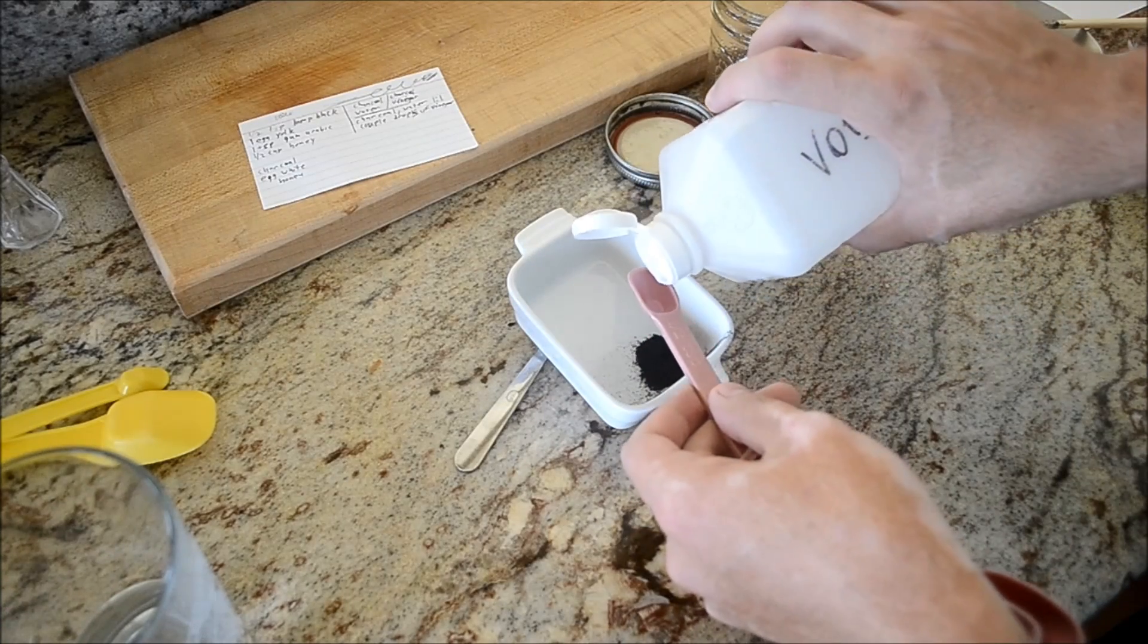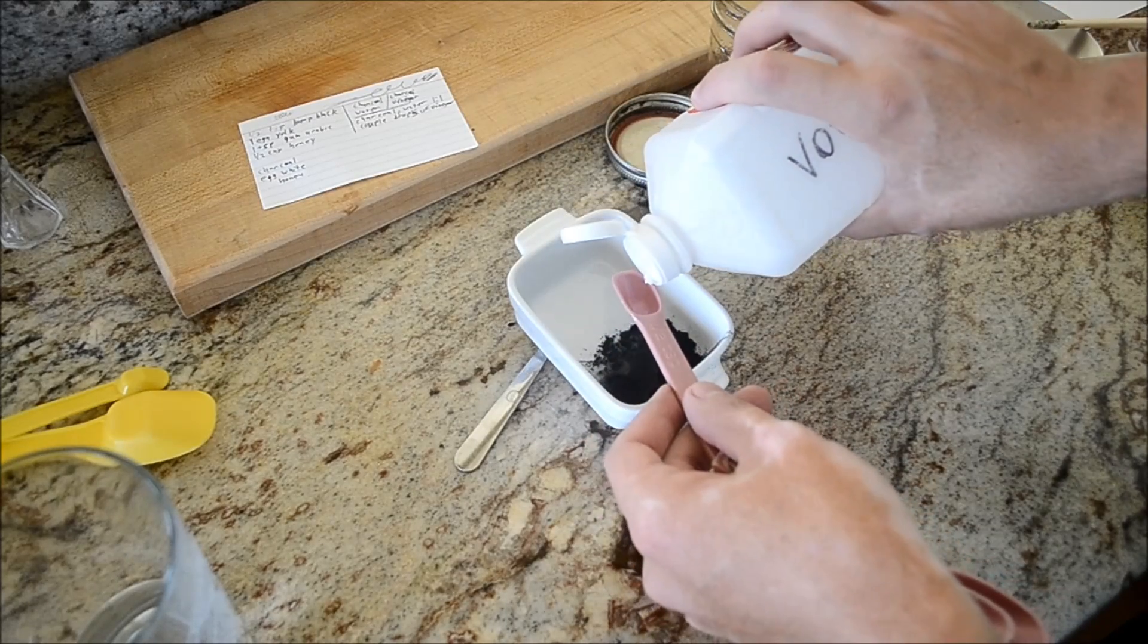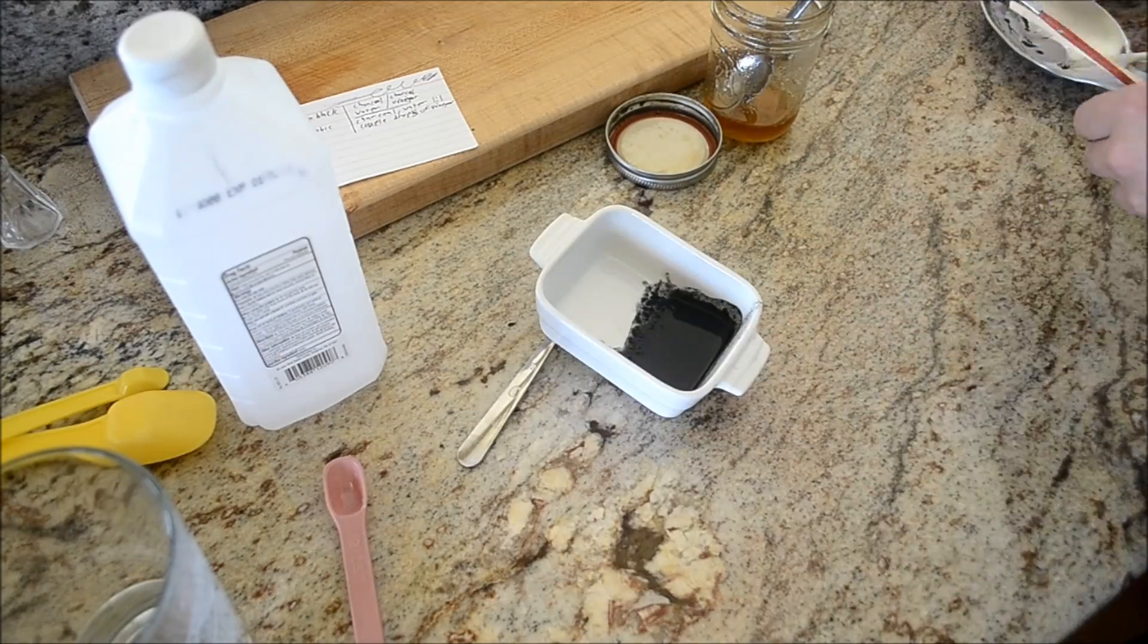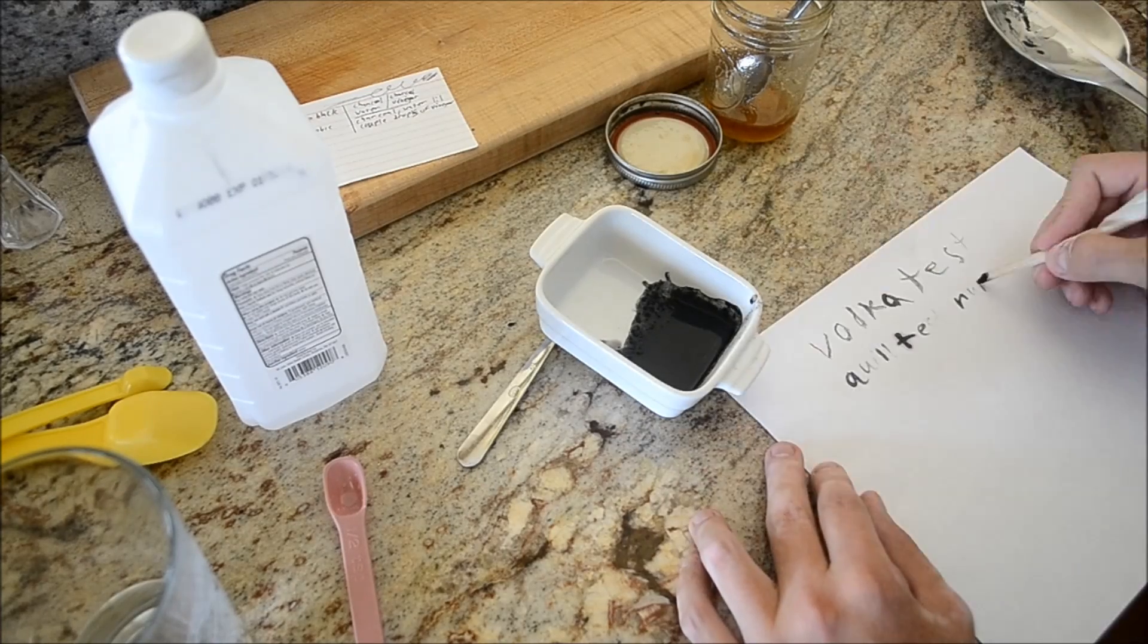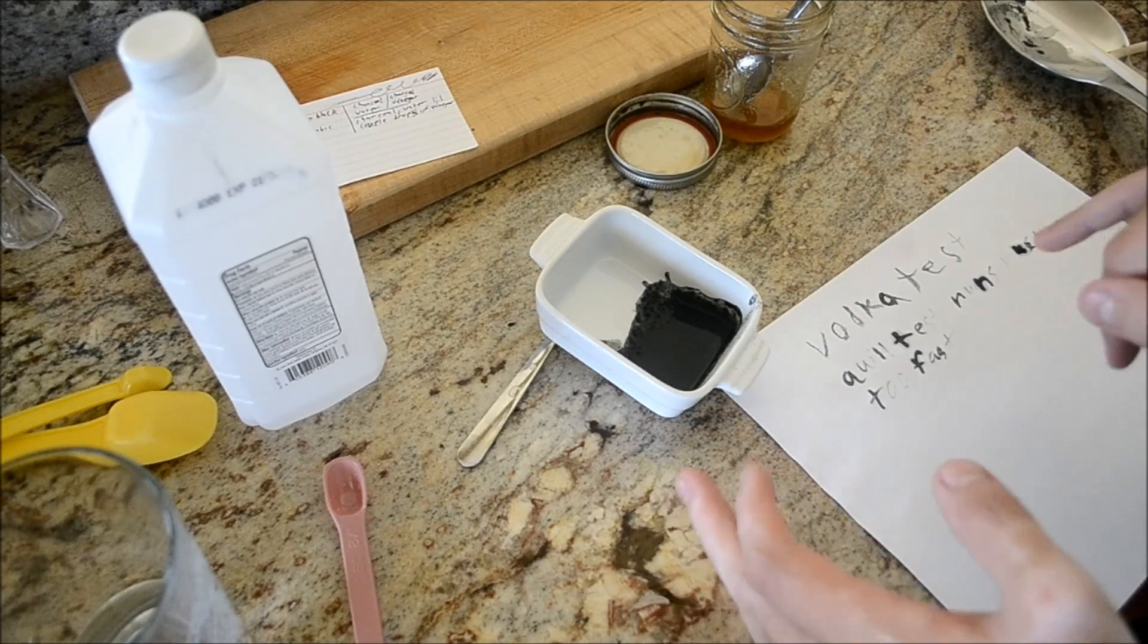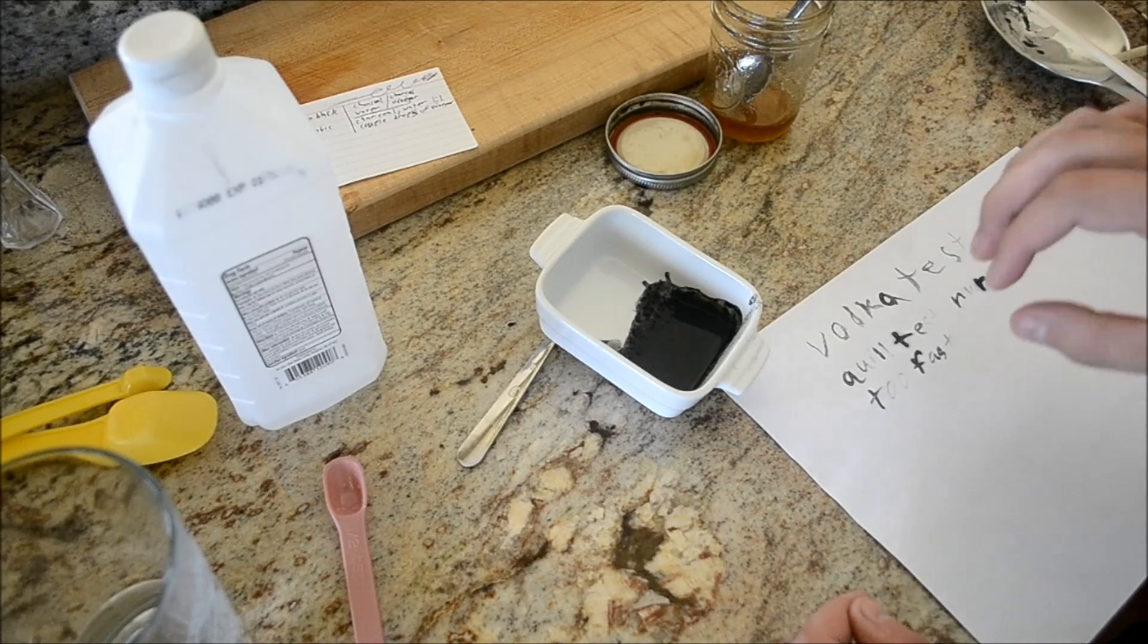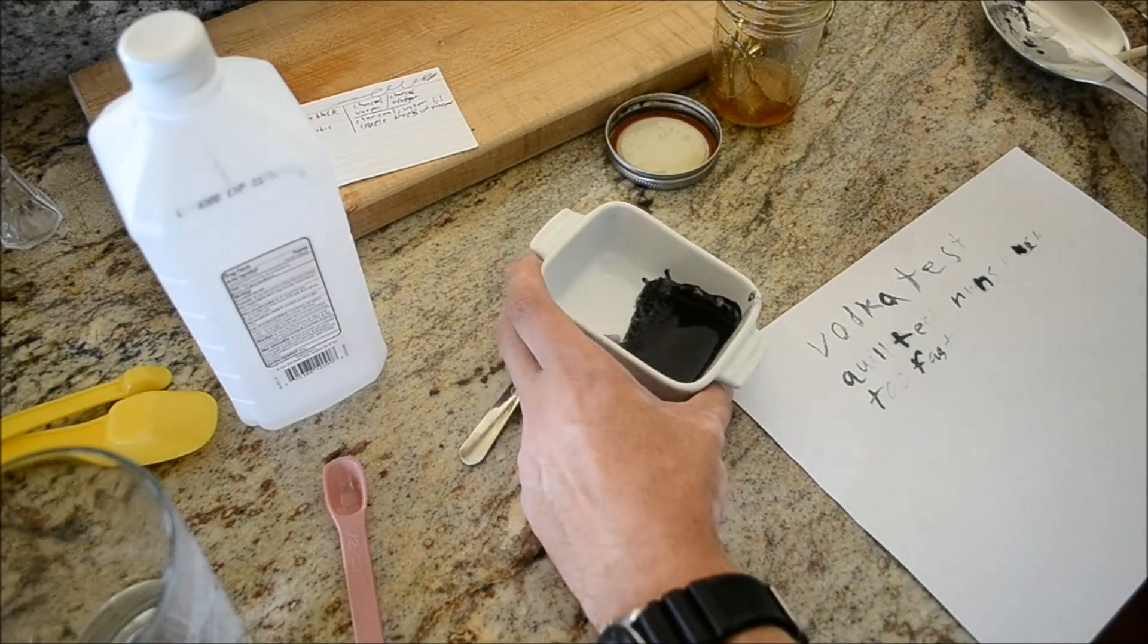It's half a teaspoon of charcoal and probably, again, at least a three to one ratio. So, the vodka looks like it's working okay, but the viscosity is lower than the water and honey on the base level. So, I'm going to add honey to it, try and thicken it up.